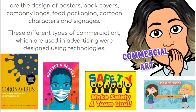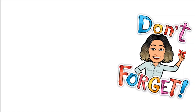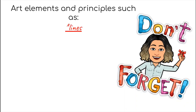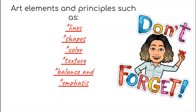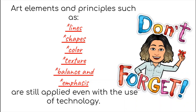Don't forget that art elements and principles such as lines, shapes, color, texture, balance, and emphasis are still applied even with the use of technology. These are the seven elements of art. Whatever you use — paper, pencil, digital art, or any type of art — you need to use the seven elements of art, because this is the fundamental foundation for creating the best art. That's all for today, goodbye.